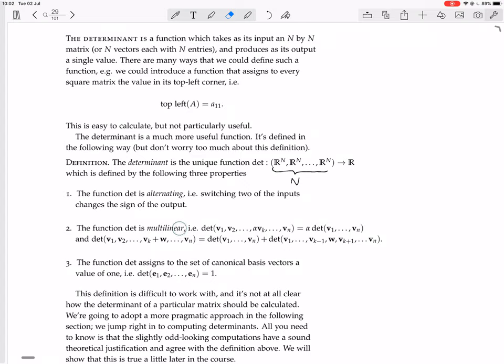It's multilinear. In other words, if you multiply one of the vectors by a scalar, you multiply the result by a scalar. If you have a sum of two vectors in one of the arguments, then you add the determinant of the thing with the first one in there and the determinant of the thing with the second one in there.